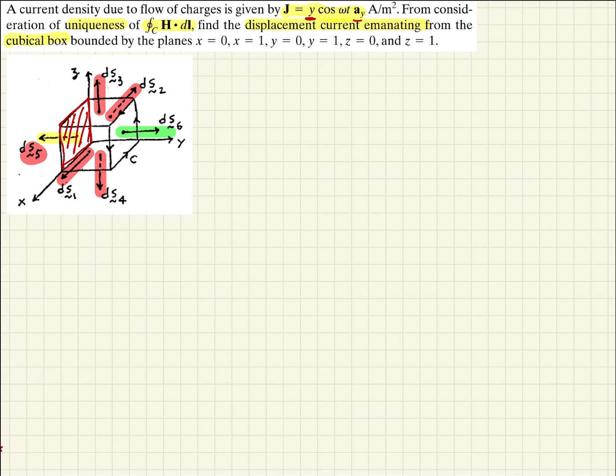So let's do that. So our current density is going to be, by definition, equal to 0 for the S1, S2, S3, S4, and S5 planes.